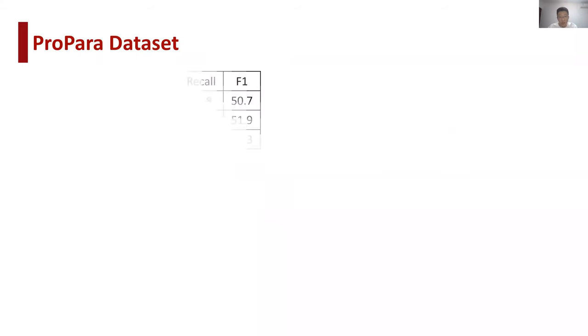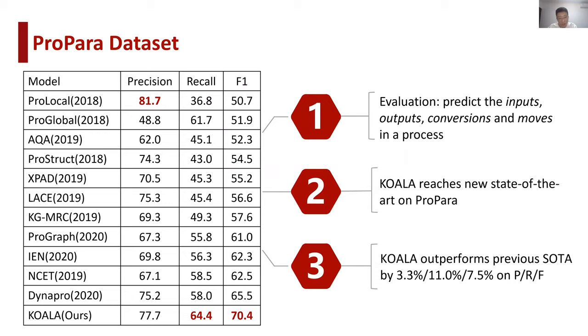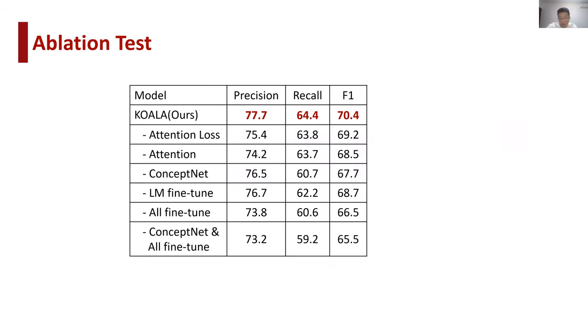Finally, about the experiments. We first conduct experiments on the ProPara dataset. This is a benchmark dataset on procedural text understanding, released by AI2 in 2018. The evaluation target is to predict inputs, outputs, conversions, and moves of a process. There have been many approaches in the past two years, and KOALA has reached new state-of-the-art on this dataset. To verify the effectiveness of the proposed methods, ConceptNet knowledge infusion and multi-stage training, we also conduct an ablation test on ProPara dataset. The results show that both methods are crucial to the model's strong performance.